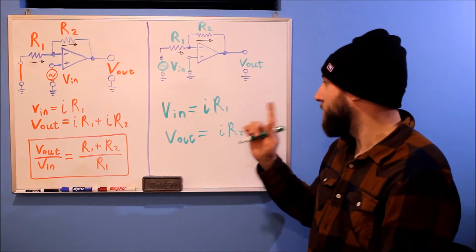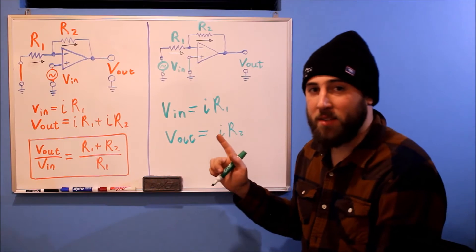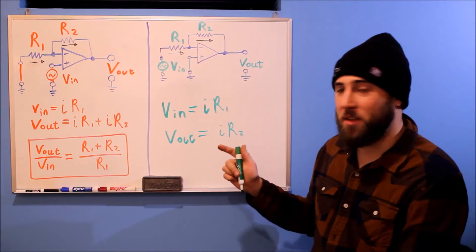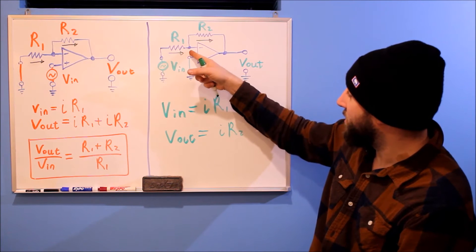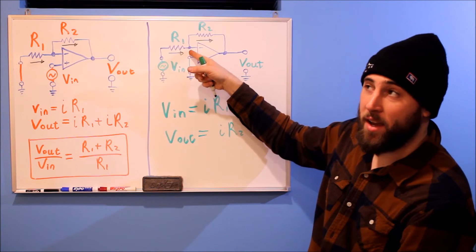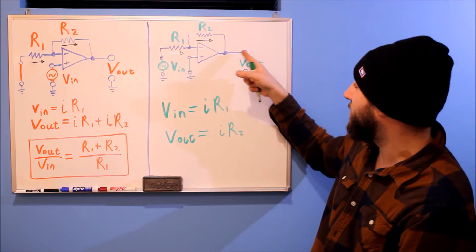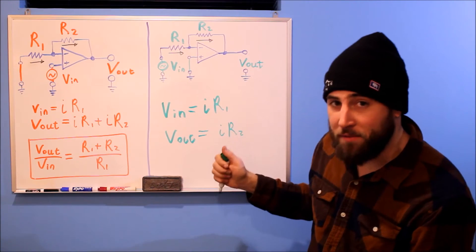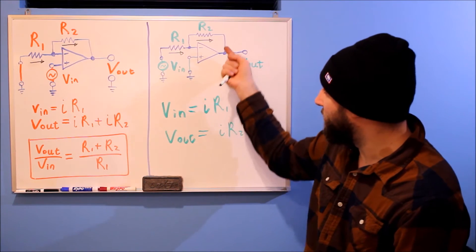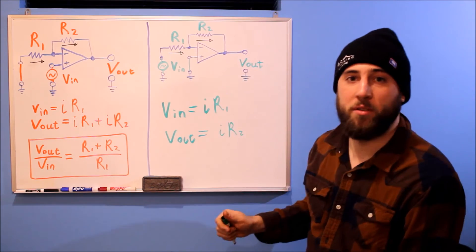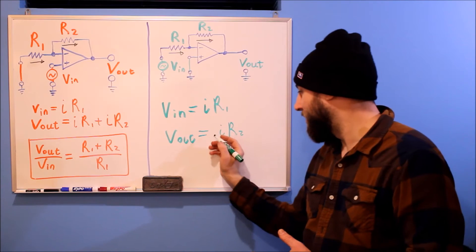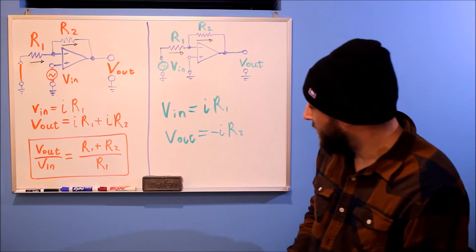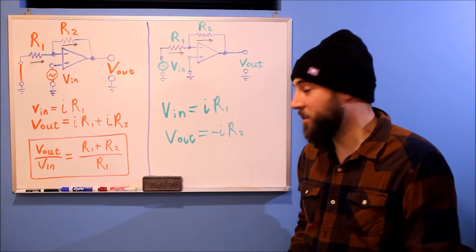Now one thing to keep in mind is that the current is flowing opposite what it did in this circuit. So in this circuit, ground is here. So this is actually at, if this is zero volts, and this is at some, let's say it's a higher voltage, the current is actually going to flow backwards through R2 from the way that it did in this circuit. So you actually get a negative sign right there. So that's where the inverting comes in.